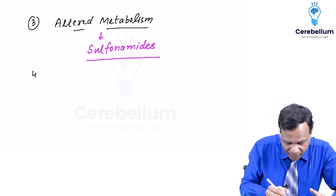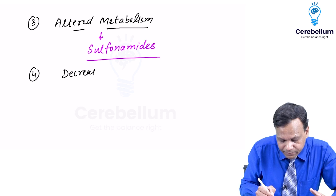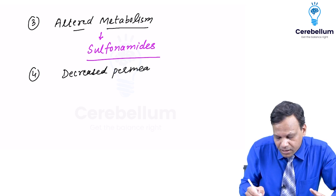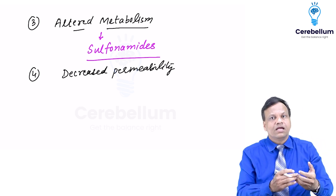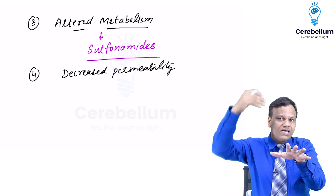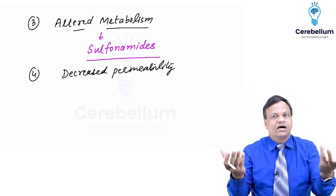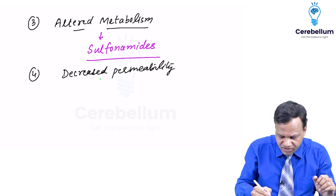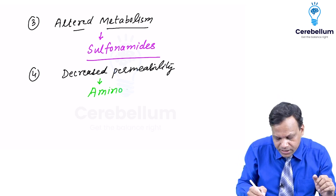Another method is decreased permeability. Normally an antibiotic works by entering the bacteria, but if there is decreased permeability, the antibiotic cannot enter and the bacteria develops resistance. This type of resistance mainly occurs with aminoglycosides.